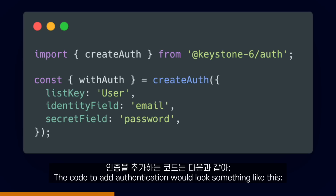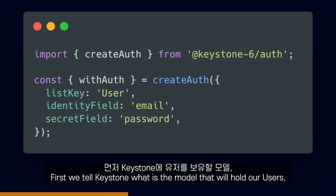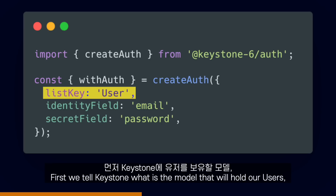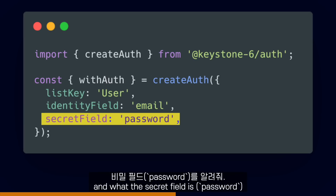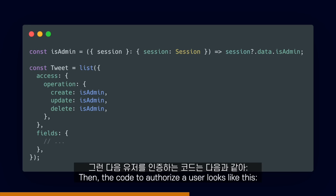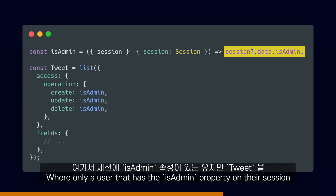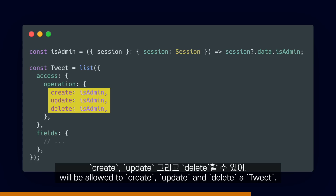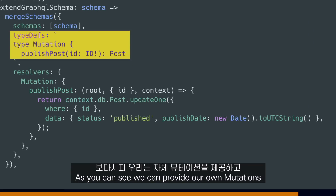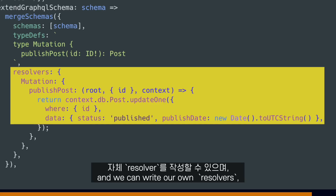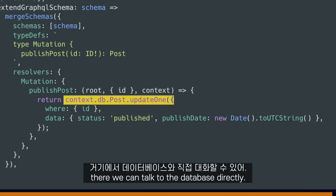The code to add authentication would look something like this. First, we tell Keystone what is the model that will hold our users, what the identifier will be — in this case email — and what the secret field is. Then the code to authorize the user looks something like this, where only a user that has the isAdmin property on their session will be allowed to create, update, and delete a tweet. The code to extend the GraphQL schema would look something like this — as you can see, we can provide our own mutations, write our own resolvers, and talk to the database directly.